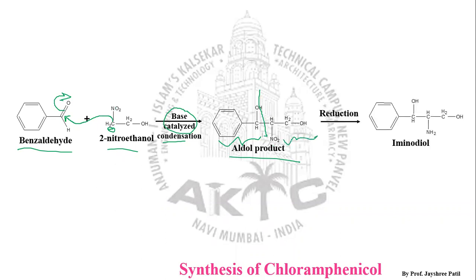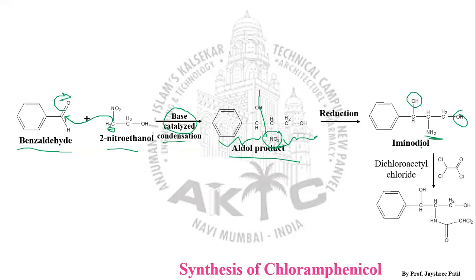This aldol product undergoes reduction. Since NO2 is present, reduction means either addition of hydrogen or removal of oxygen, so NO2 is converted into NH2. As there are two alcohol groups, that is a diol, plus the amino group — so there is a reduction of the nitro group in the aldol product into the aminodiol.